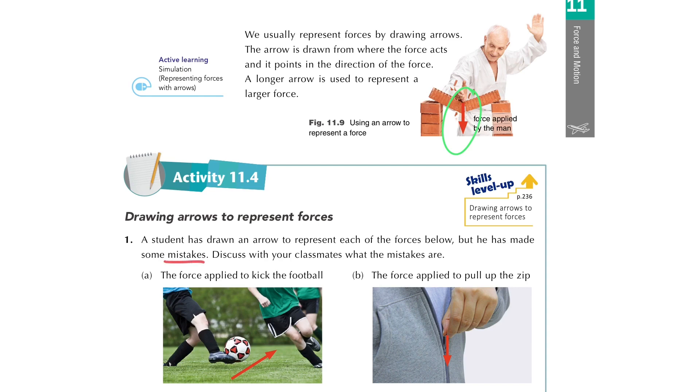Let's consider the first one. Suppose it represents the force applied to kick the football, but when you look at the arrow, it's wrong because the arrow cannot touch the football. If we use an arrow to represent the force on the football, the arrow should start from the contact point between the foot and the football.